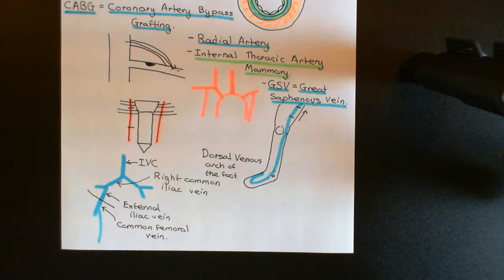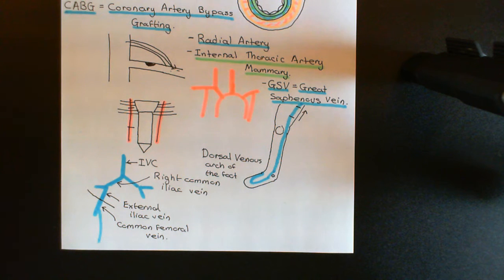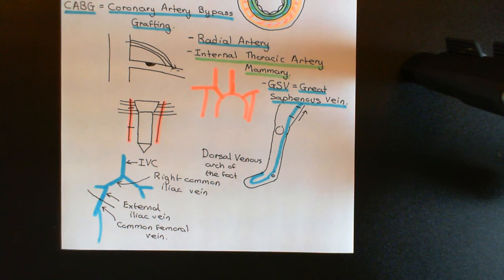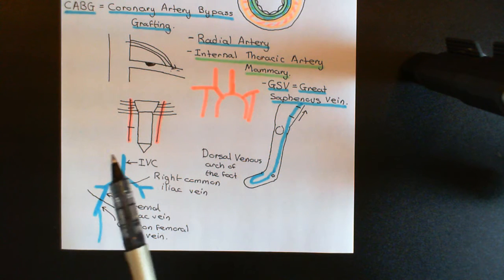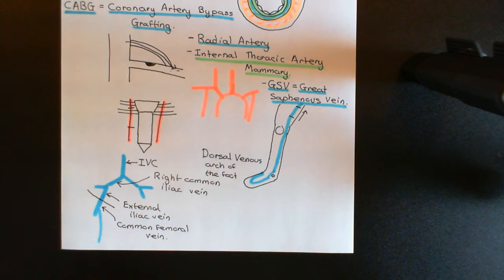What I now want to discuss is how do we actually treat people who currently have a thrombus occluding one of their coronary arteries. Two options are that we could do revascularisation surgery, which I've just talked about for the treatment of stable angina.